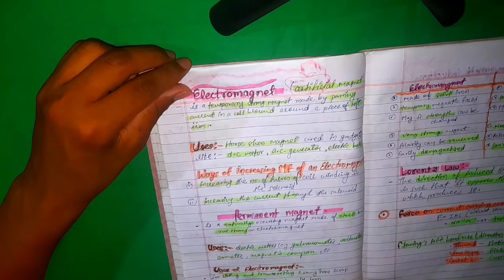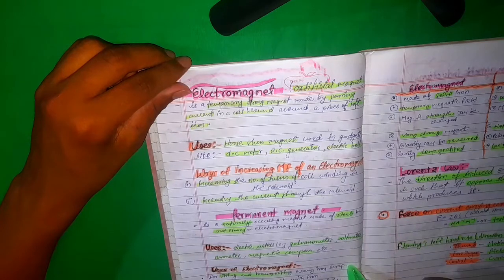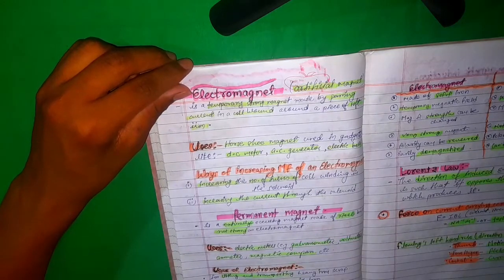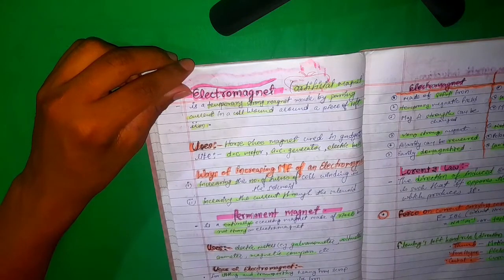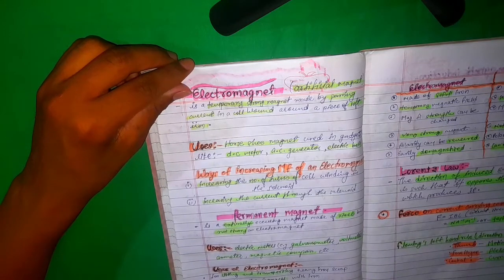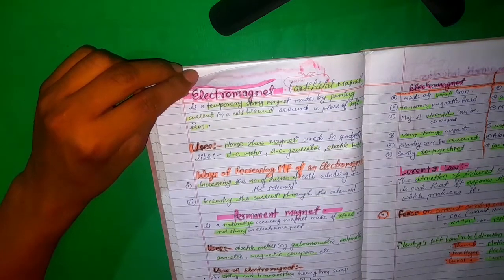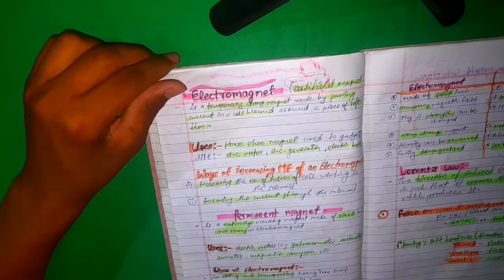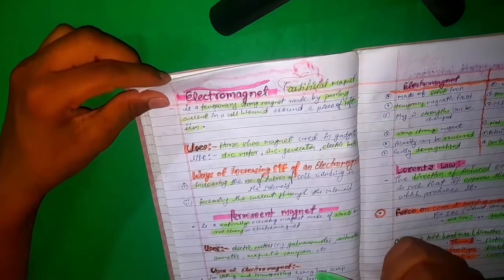Uses of permanent magnets include electric meters such as galvanometers, voltmeters, and ammeters, and also in magnetic compasses. Uses of electromagnets include lifting and transporting heavy iron items, loading furnaces with iron, separating iron from ores and debris, and removing pieces of iron from wounds.